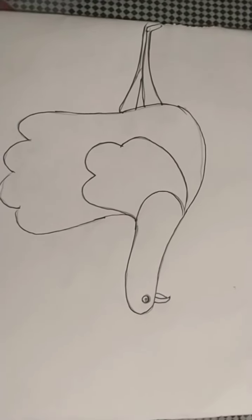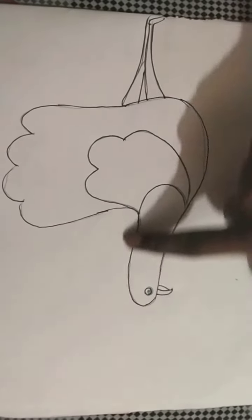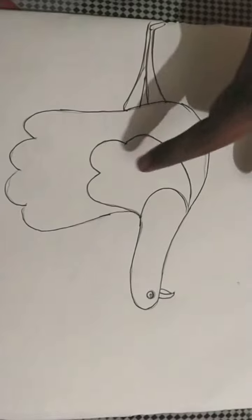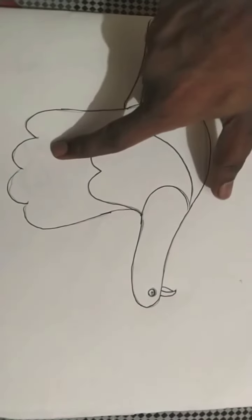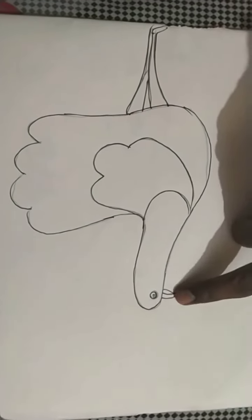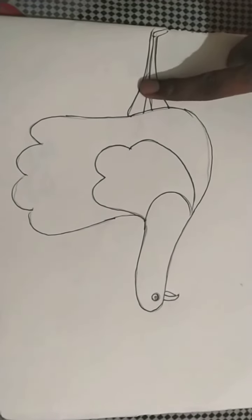And this way we complete the outline with the black marker pen and then we fill the color. We fill dark pink color here, light pink color here, light pink color here, yellow in the beak and the leg.